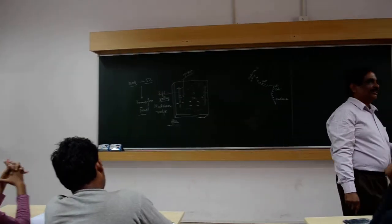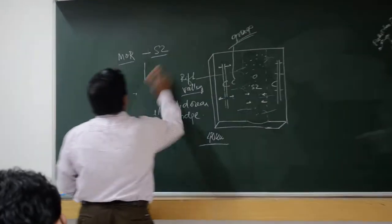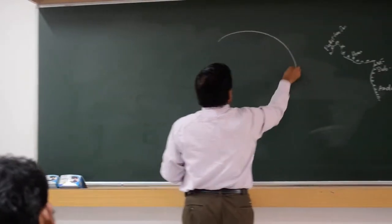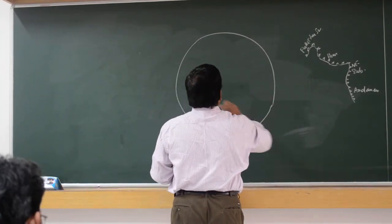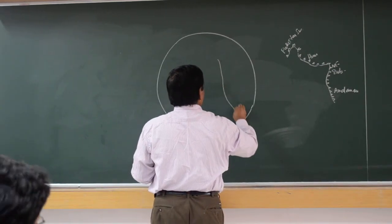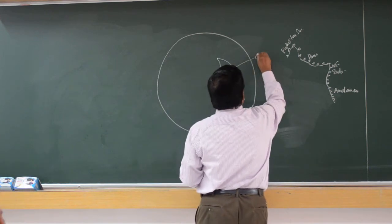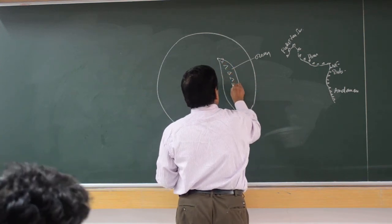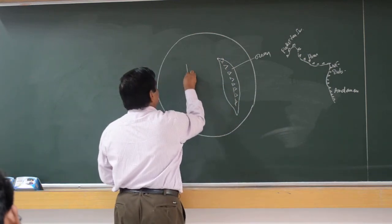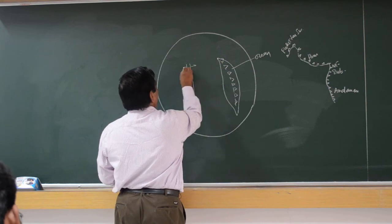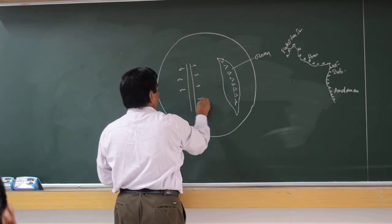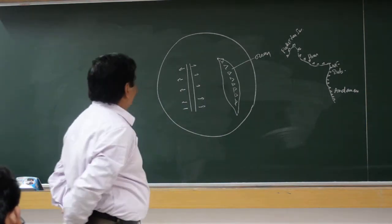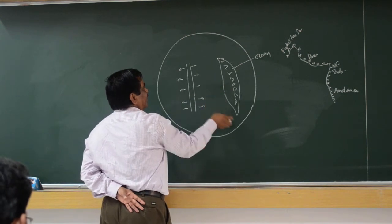It is a single chain process. How the transform fault will be created? I will draw it again. Now here I will draw the globe. Suppose here was an ocean. The subduction zone happened here, so the ocean closed. Then the mid-ocean ridge opened up here. A new ocean will open up gradually. This crust from here to here is called a plate.